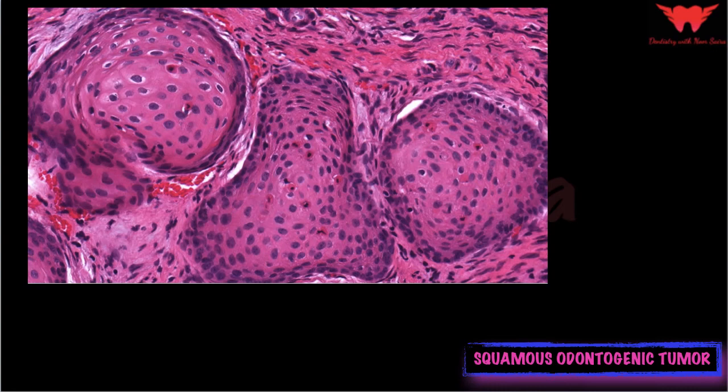Microscopically, squamous odontogenic tumor presents as irregularly shaped islands of well-differentiated squamous epithelium in a mature fibrous connective tissue stroma. The islands can be round or oval in shape, and there is an absence of peripheral palisaded or polarized basal cells. Individual cell keratinization is often seen, and focal areas of keratin or parakeratin formation by neoplastic epithelial cells are also sometimes noticed.